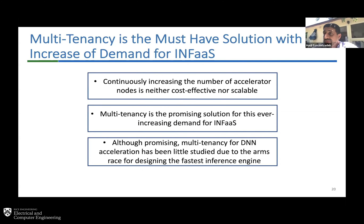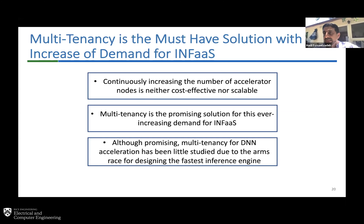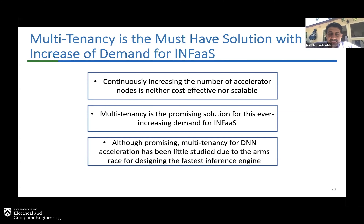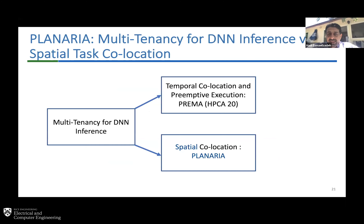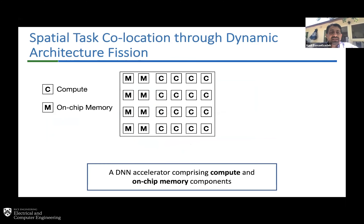What we need to do is what we did with CPUs and GPUs: start providing multi-tenant solutions. This dimension has not been explored previously, although there are two concurrent papers this year — one in HPCA from KAIST that looks at temporal multi-tenancy, meaning you're not running multiple accelerators simultaneously but swapping them in and out. We are looking at simultaneous spatial co-location.